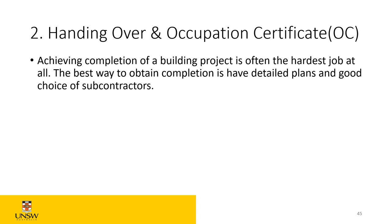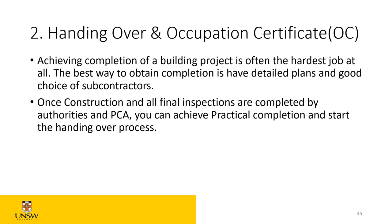What is the occupation certificate? It is the achieving of completion of a building project. It's usually one of the hardest things to get over the line because there are a lot of details and conditions to satisfy. The best way to obtain completion is to have a detailed plan, a good choice of subcontractors, and always be prepared. Once construction and all final inspections are completed by all subcontractors and the PCA, you can achieve the completion and start the process of handing over the site.